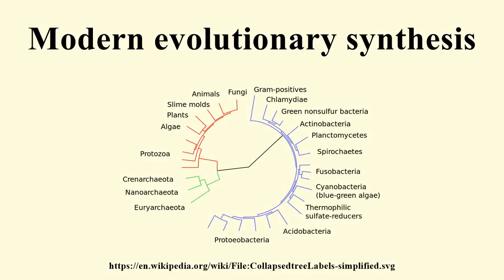The modern evolutionary synthesis is a 20th century synthesis of ideas from several fields of biology that provides an account of evolution which is widely accepted. The synthesis, produced between 1936 and 1947, reflects the consensus about how evolution proceeds. The previous development of 19th century evolutionary ideas by Charles Darwin, Gregor Mendel and others in population genetics, between 1918 and 1932, was a stimulus, as it showed that Mendelian genetics was consistent with natural selection and gradual evolution.